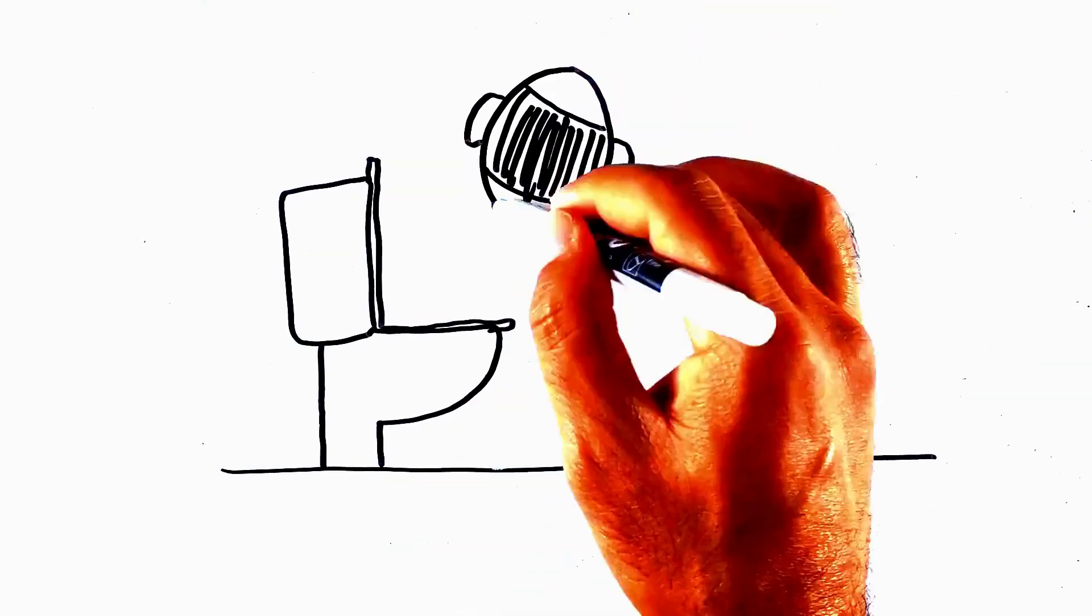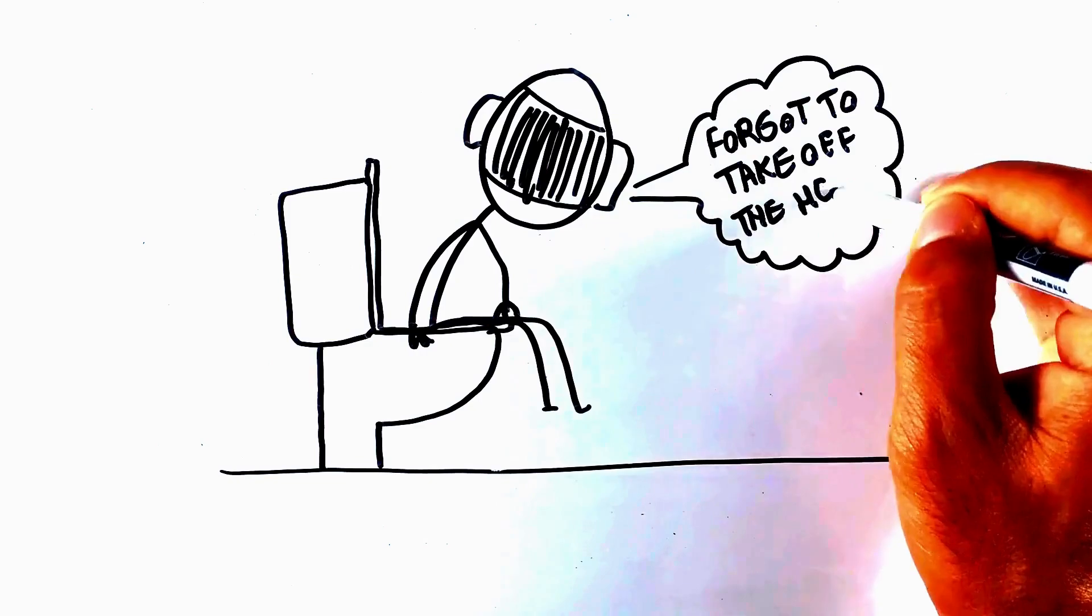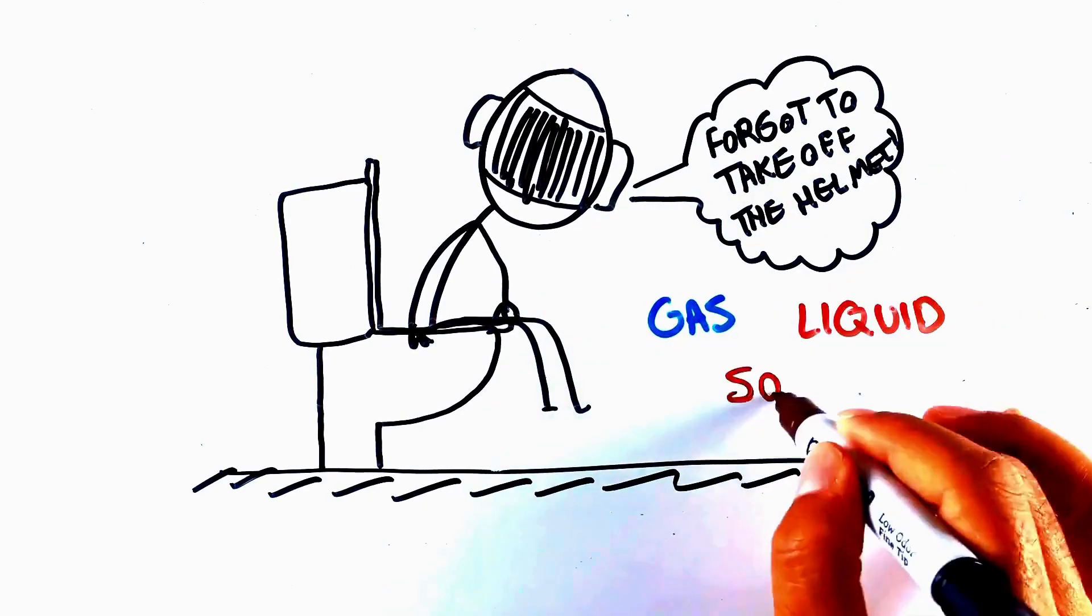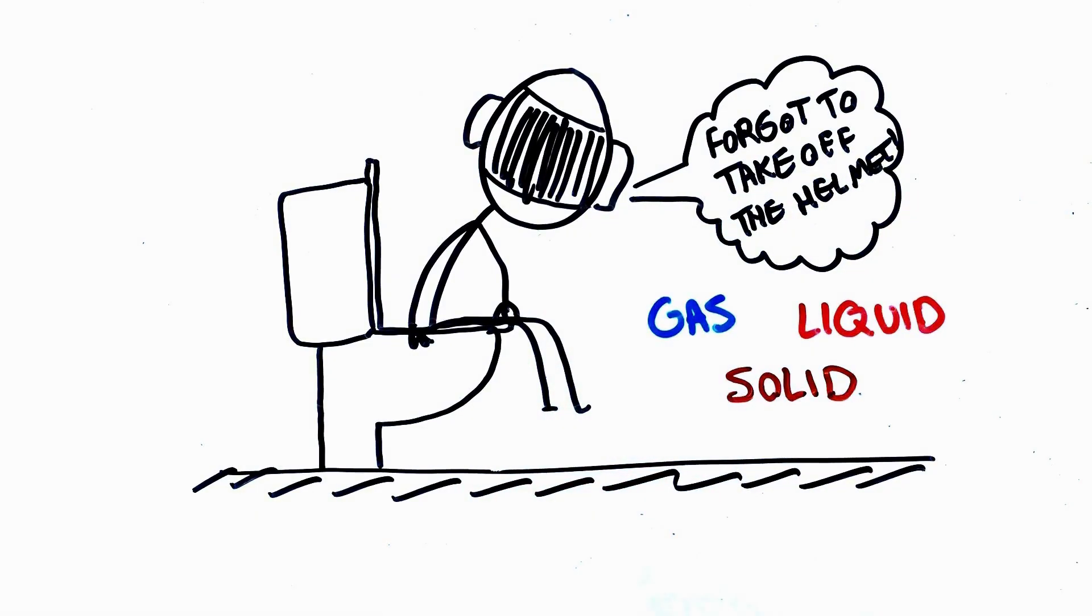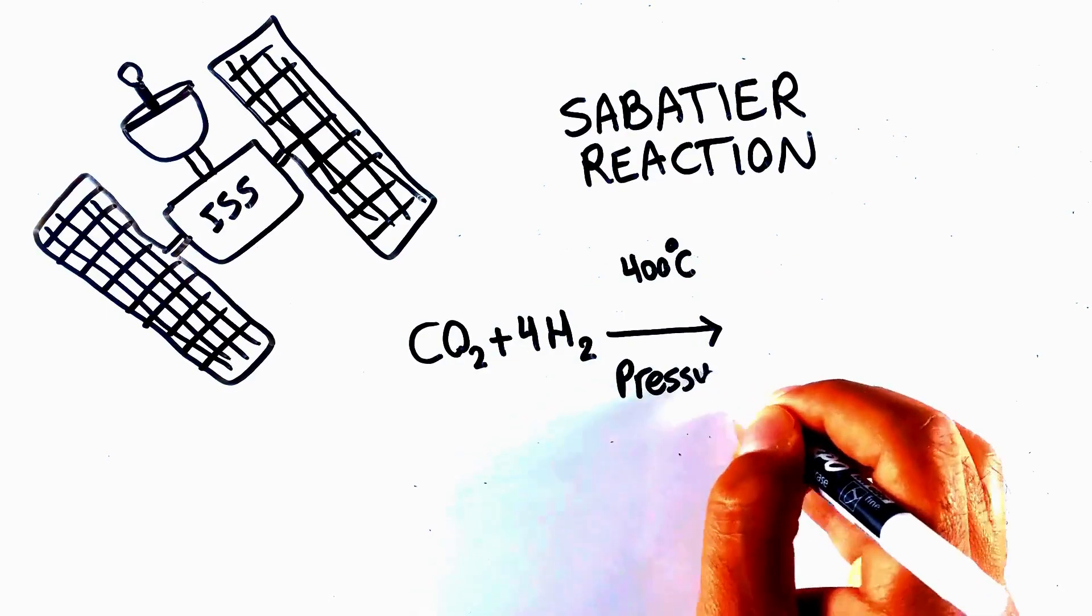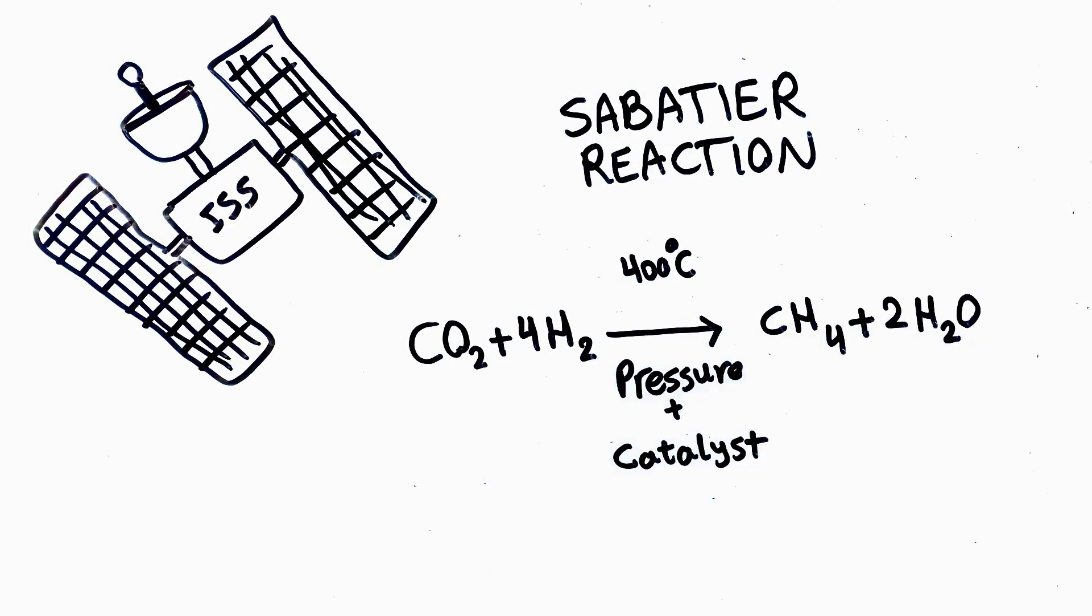Human habitats create biological waste in the form of gas, liquid, and solid that needs to be recycled by the life support and environmental control facility. Currently, on the International Space Station, a Sabatier reaction is used to remove carbon dioxide from human habitats and make water. However, this reaction is highly energy-intensive.